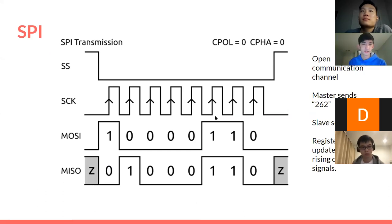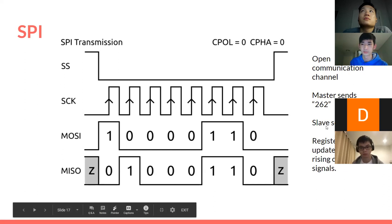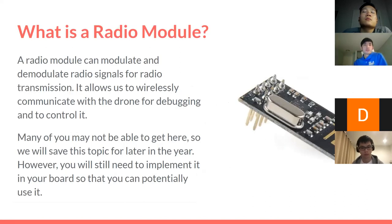Here you can see the clock line — on the rising clock edge, bits are transferred. The data transmission rate is completely limited by your clock frequency, which is why we need an external clock to increase our transmission rate. The master is sending data and MISO sends data back — the register gets updated on the rising clock signals. SS being low opens the communication channel, and low is always active in this case.